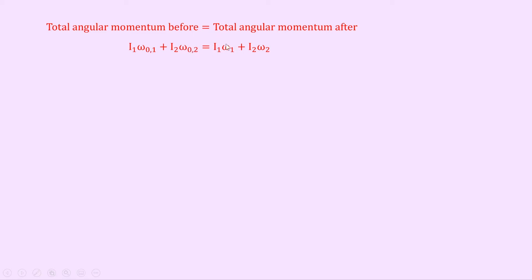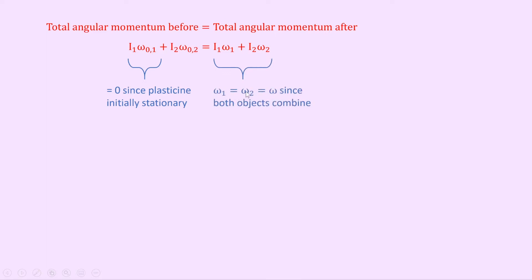This says the angular momentum of the plasticine before plus the angular momentum of the turntable before equals the angular momentum of the plasticine after plus the angular momentum of the turntable after — the angular version of M1U1 plus M2U2 equals M1V1 plus M2V2 from higher physics. We can simplify: the left-hand term I1 omega01 equals zero since the plasticine is initially stationary. On the right-hand side, omega1 equals omega2 equals omega since both objects combine and share the same angular velocity. So we get I2 omega02 equals I1 plus I2 times omega.